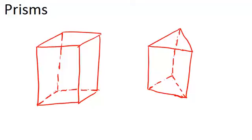In this video, we are going to learn about prisms. A prism is a type of polyhedron. It's a 3D solid which has two faces that are parallel to each other, and those are called the bases.